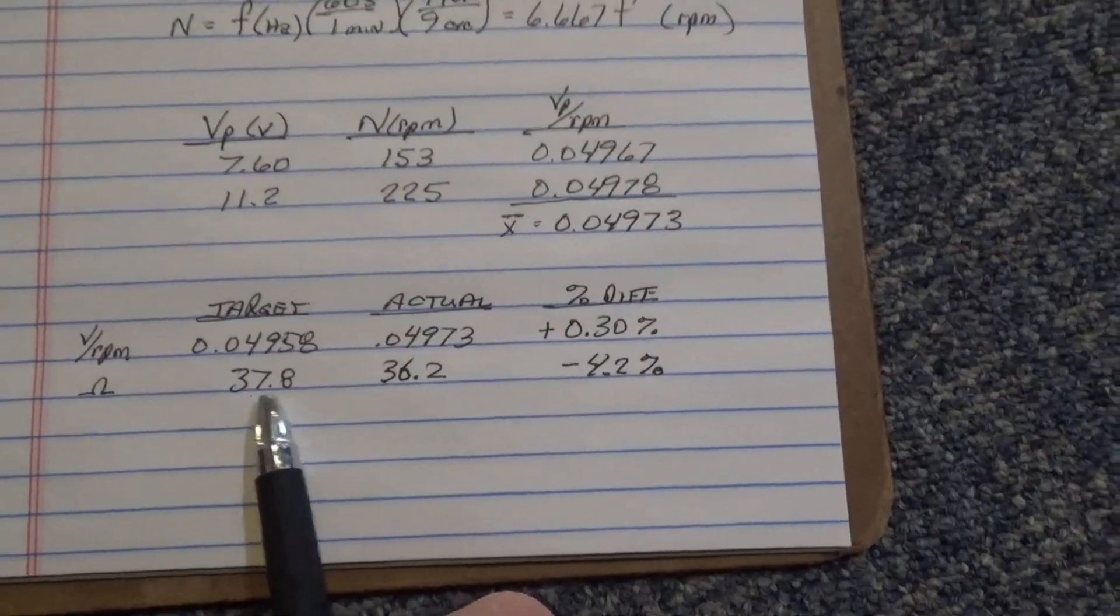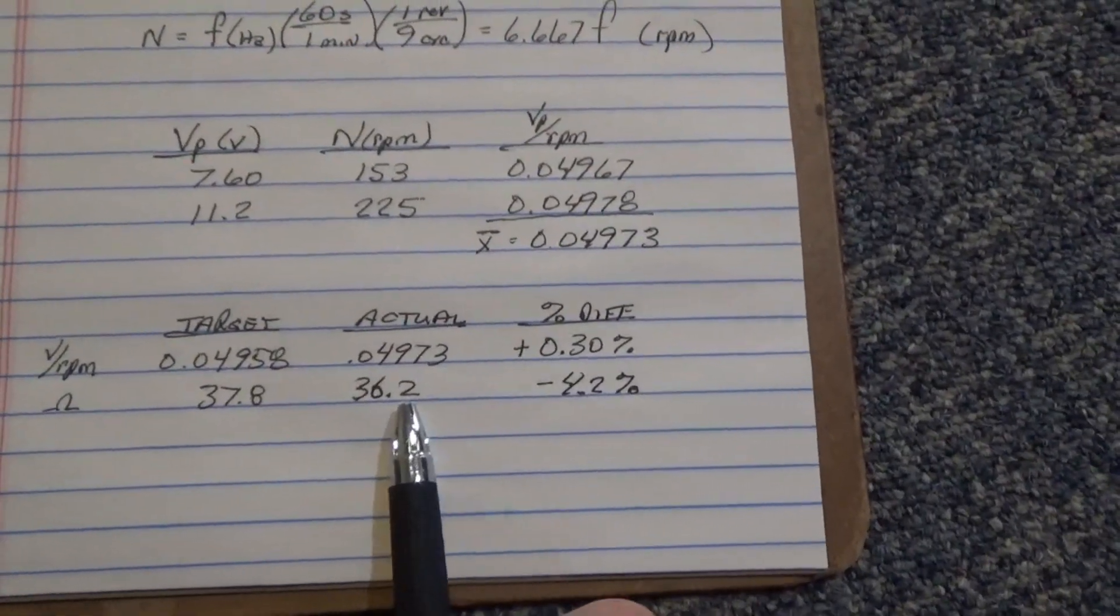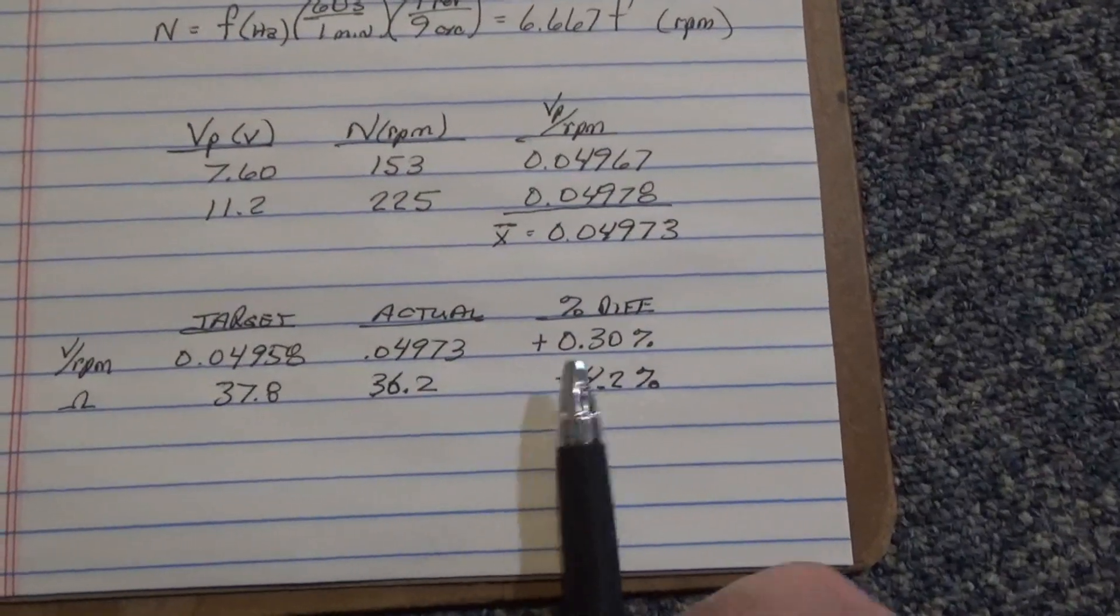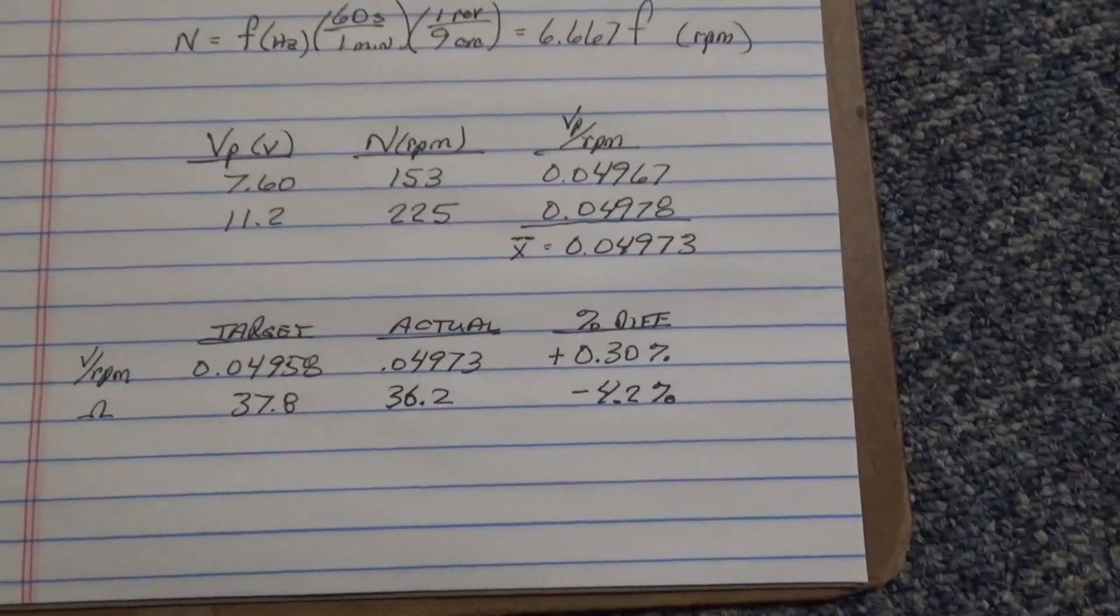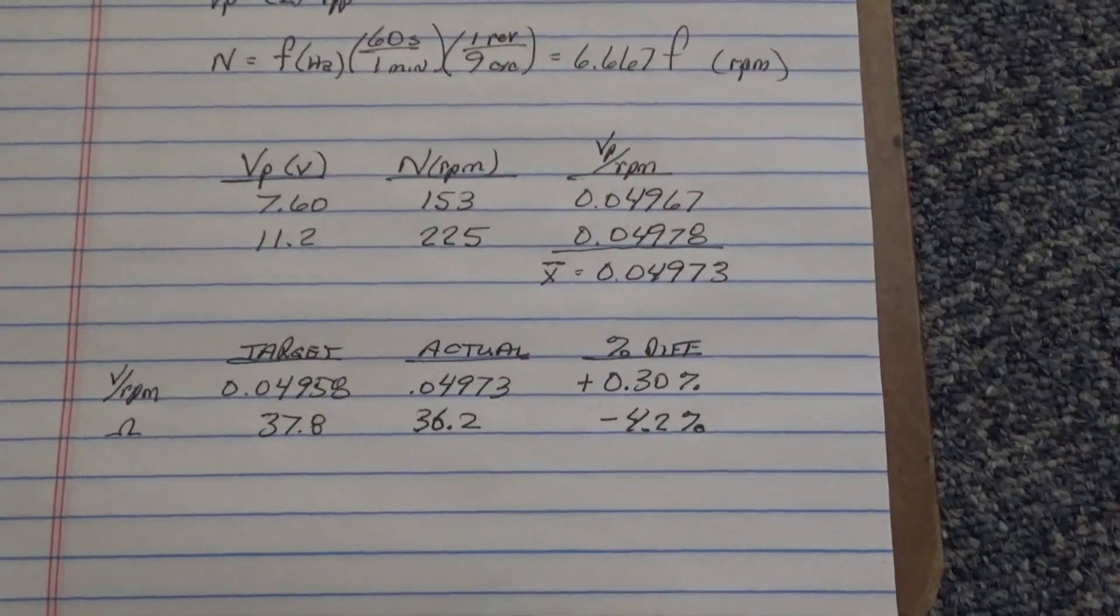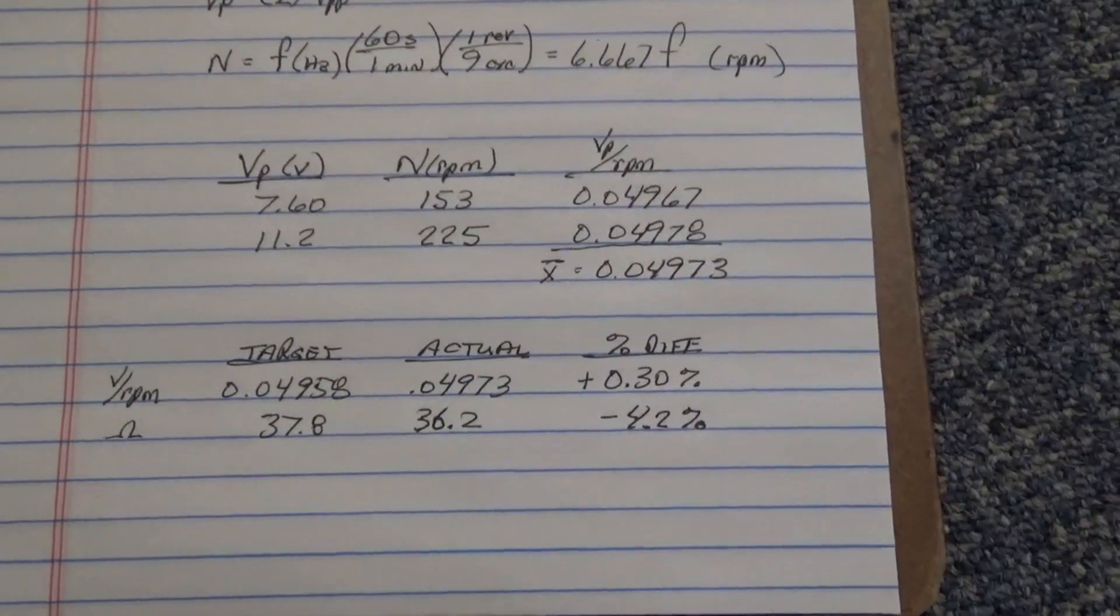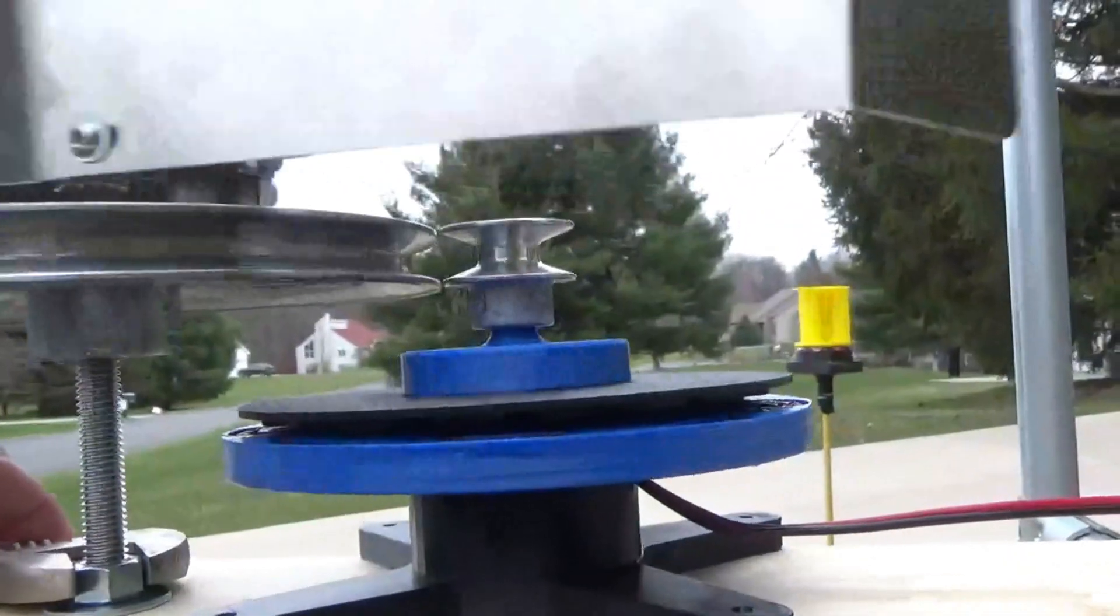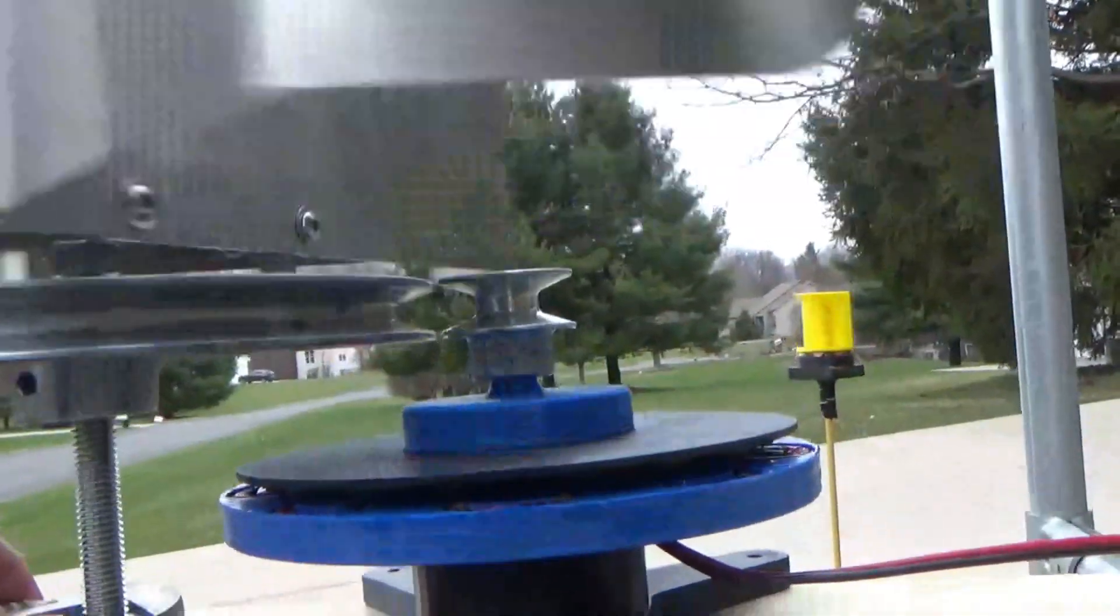The resistance 37.8 was the target. 36.2 was actual. So we were down about 4.2% on the resistance. But overall, I was quite happy with how that generator turned out. And just adjust this nut until those pulleys are even.